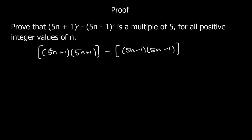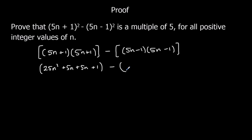We're going to expand them first, and then we'll do the take away after. So let's expand them first. 5n times 5n is 25n squared. Then we've got plus 5n, plus 5n, plus 1. So that's the first one. And the second one, we've got 25n squared, minus 5n, minus 5n, plus 1.